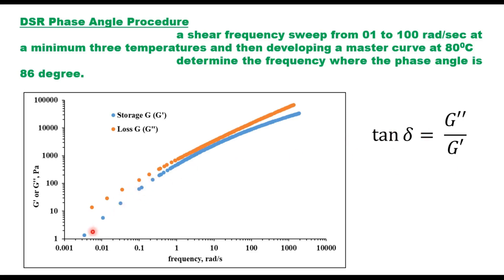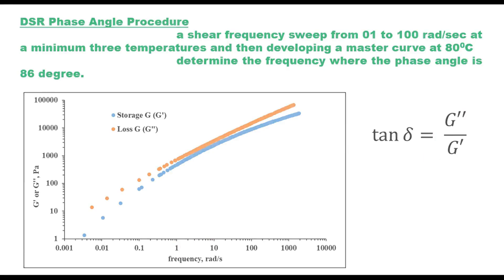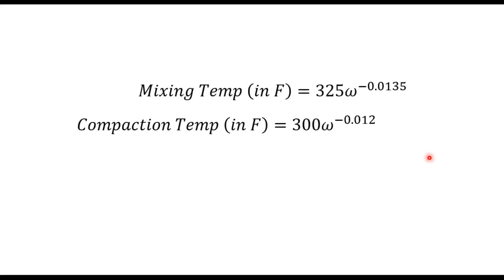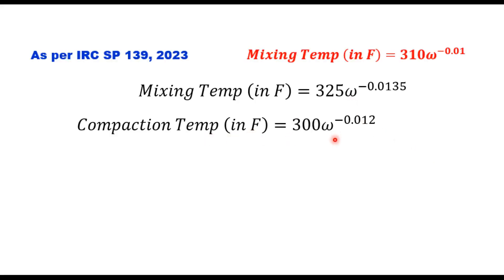At low frequency there is a large difference between G′ and G″, which reduces at high frequency and then increases again. The master curve for phase angle does not have a well-defined shape, so it is advised to determine G′ and G″ and then take the ratio G″/G′ to get tan(δ). Corresponding to δ = 86°, tan(δ) will be around 14.3 — find the frequency corresponding to this ratio of 14.3. Then calculate mixing temperature and compaction temperature using their respective equations, where ω is the frequency at a phase angle of 86° and the resulting temperature is in Fahrenheit.